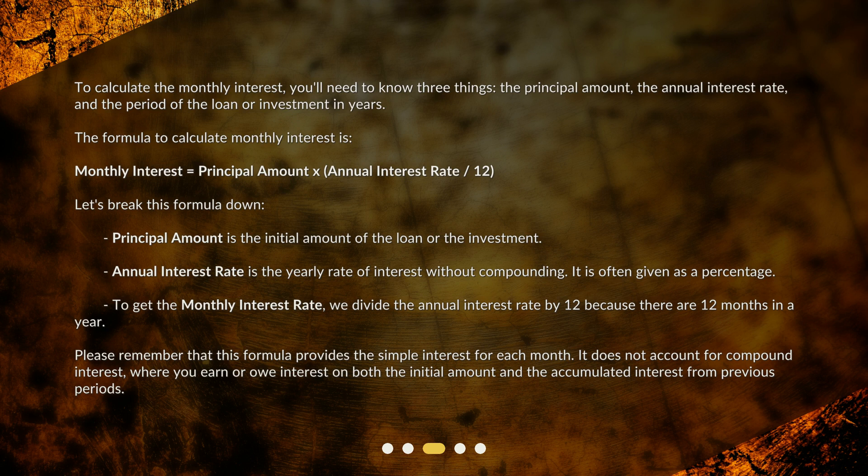Let's break this formula down. The principal amount is the initial amount of the loan or the investment. The annual interest rate is the yearly rate of interest without compounding — it is often given as a percentage. To get the monthly interest rate, we divide the annual interest rate by 12 because there are 12 months in a year. Please remember that this formula provides the simple interest for each month; it does not account for compound interest, where you earn or owe interest on both the initial amount and the accumulated interest from previous periods.